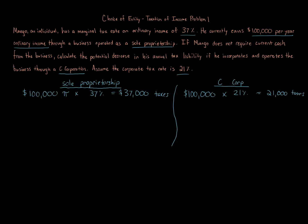You can see 21 thousand is a lot less than 37 thousand, so you'd prefer to be a C corporation. Of course, there are more issues to consider — the effects of losses, and distributions, when made, create another level of taxation for C corporations. But since there are no plans to distribute, and assuming Mango can avoid the accumulated earnings tax or any penalty for not distributing earnings, the idea is straightforward. The difference between these two numbers — 21 thousand and 37 thousand — is a 16 thousand dollar tax savings by being a C corporation.